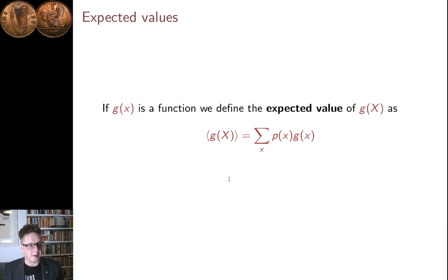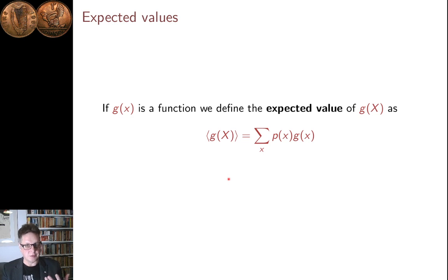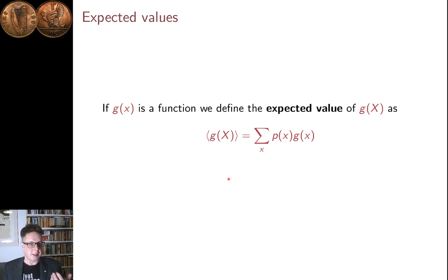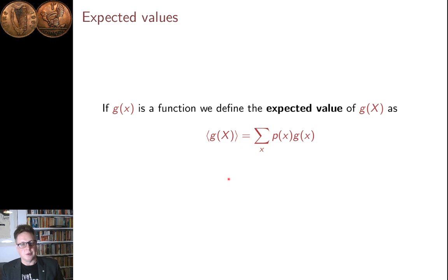Before, we learned about random variables, and the thing that we got with random variables was this way of describing events that allowed us to write down some of the probabilities that we might be interested in easily — it was a useful and powerful notation. Another advantage of random variables is that when you do have a random variable, you get the stuff that comes with real numbers; in other words, you're able to add things and multiply them.